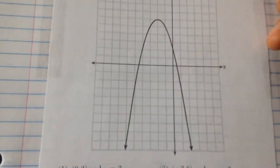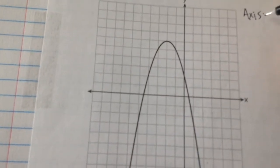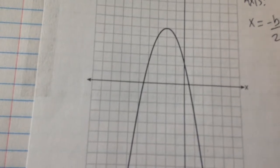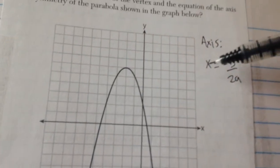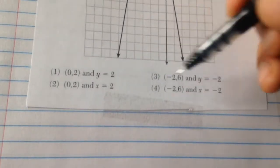First of all I want to point out that the equation of the axis of symmetry is always x equals negative b over 2a. It's always going to be x equals, so these two choices 1 and 3 that have y equals you can go ahead and cross those off almost instantly.